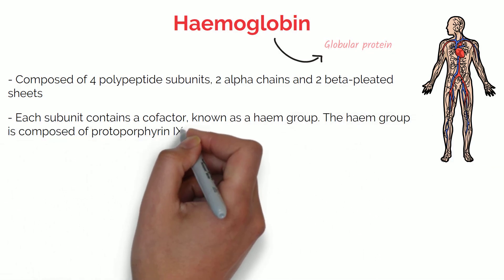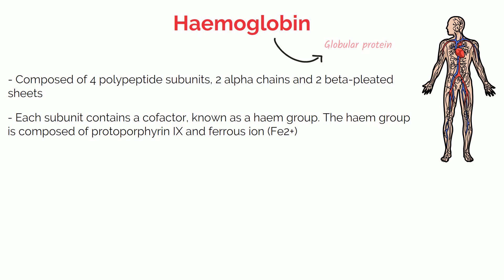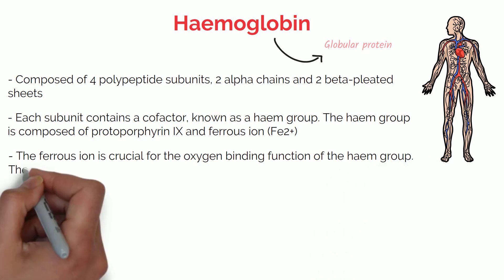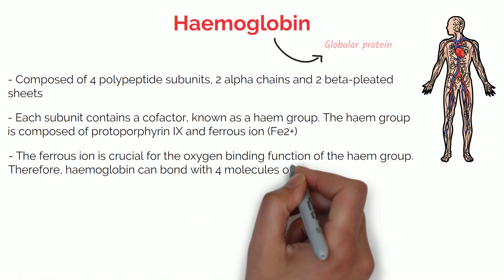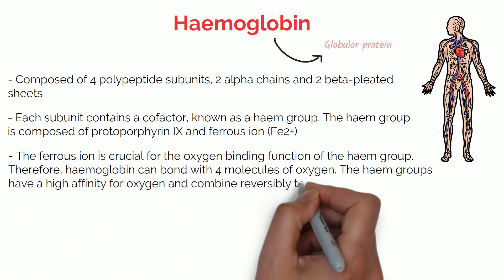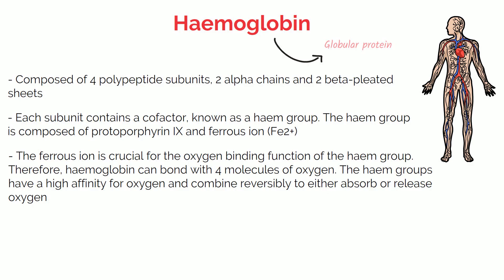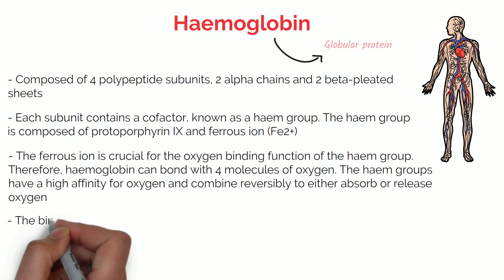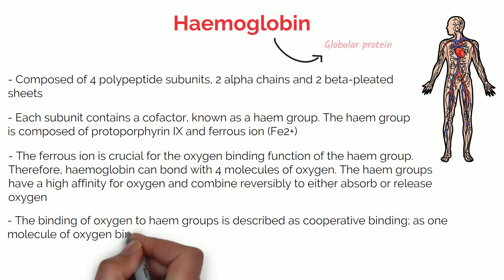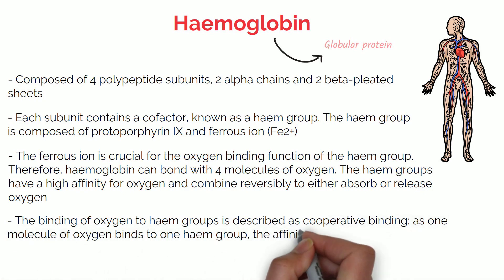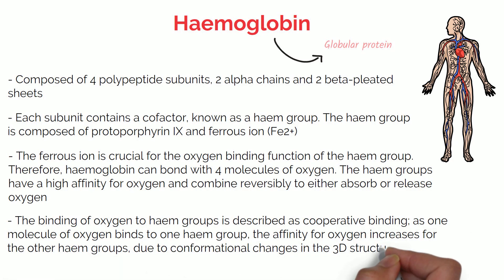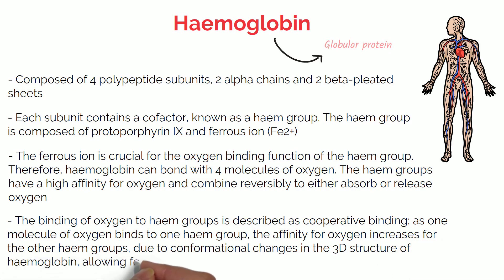The haem group is composed of protoporphyrin IX and ferrous iron. The ferrous iron is crucial for the oxygen-binding function of the haem group; therefore, haemoglobin can bond with four molecules of oxygen. The haem groups have a high affinity for oxygen and combine reversibly to either absorb or release oxygen. The binding of oxygen to haem groups is described as cooperative binding: as one molecule of oxygen binds to one haem group, the affinity for oxygen increases for the other haem groups due to conformational change in the 3D structure of haemoglobin, allowing for easier binding.